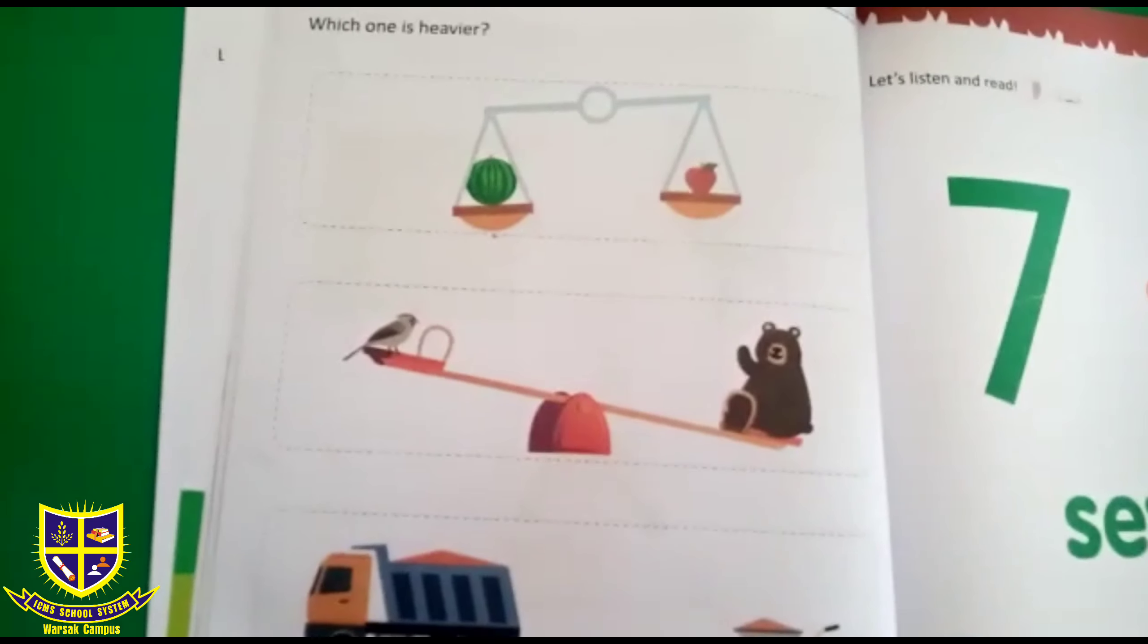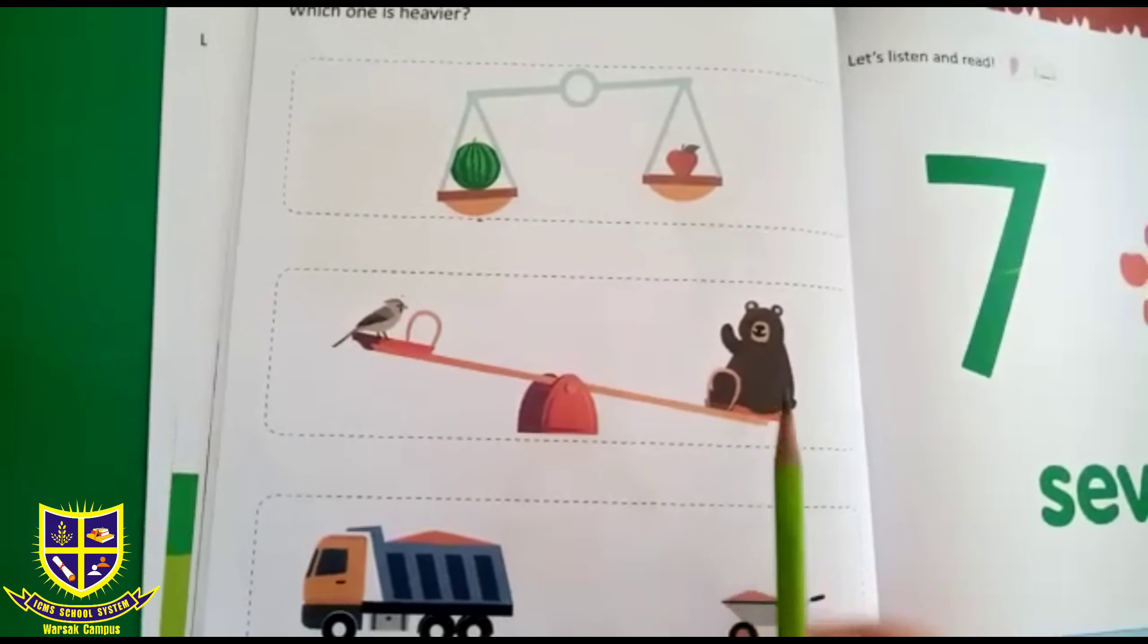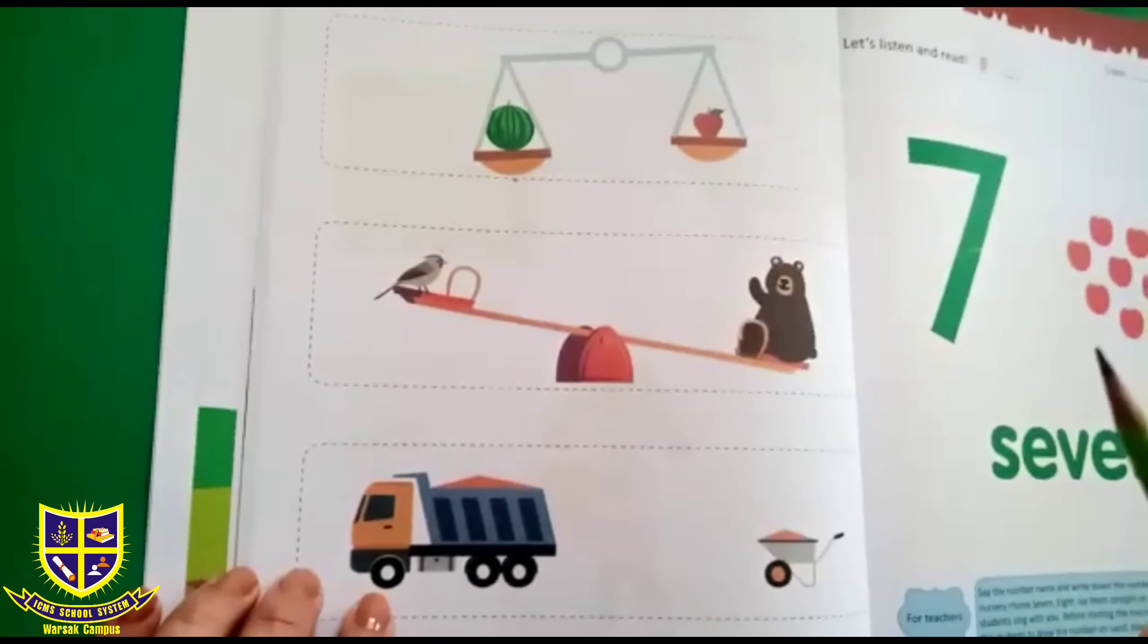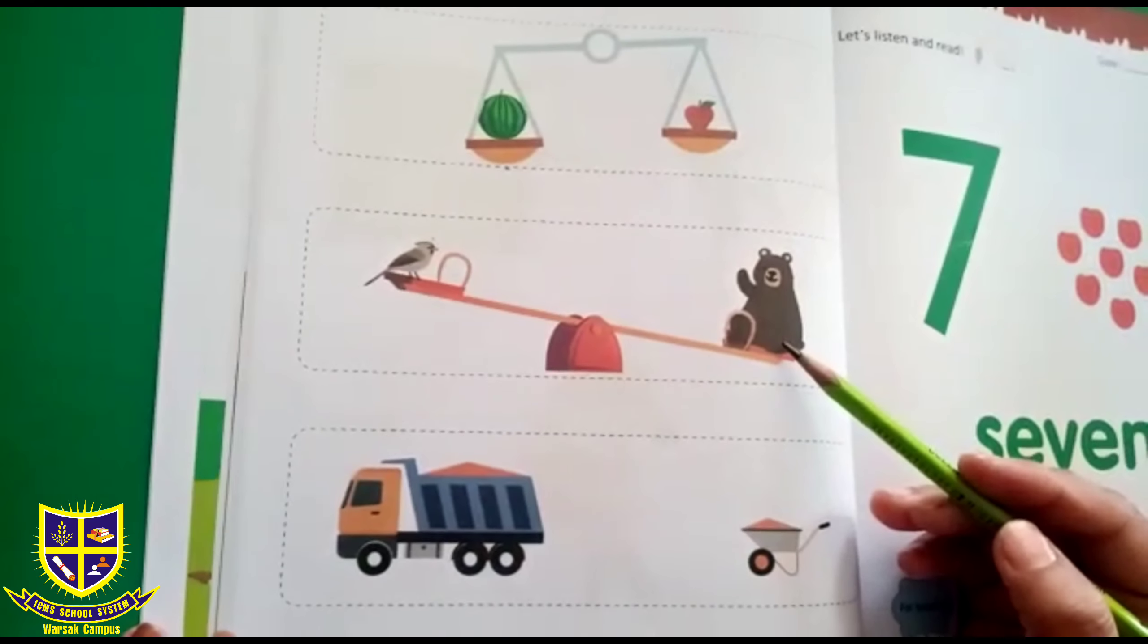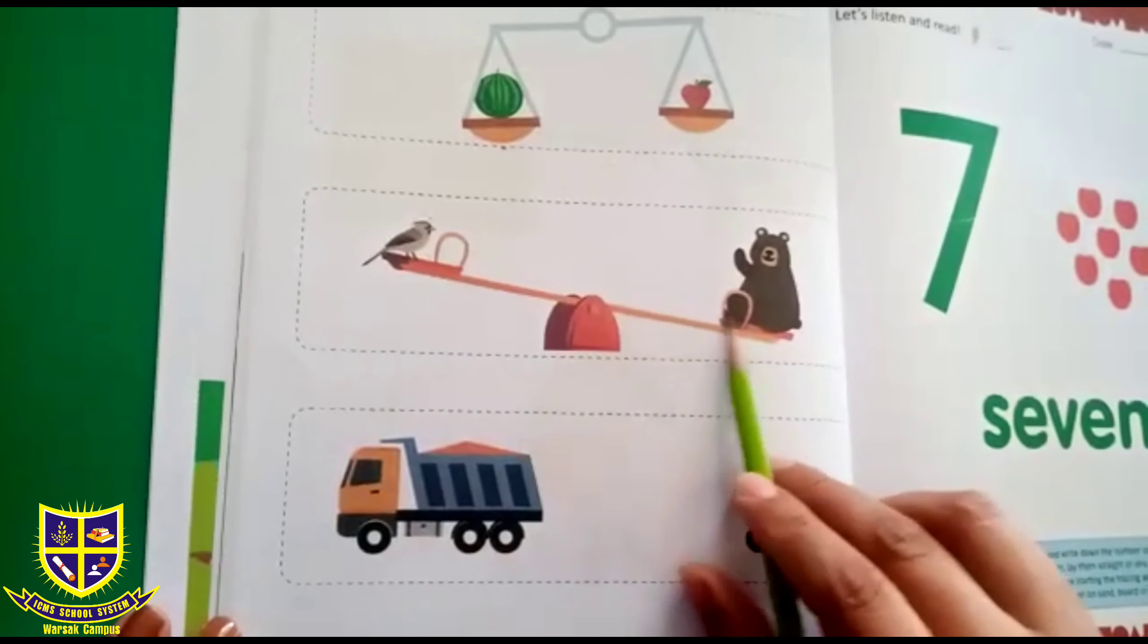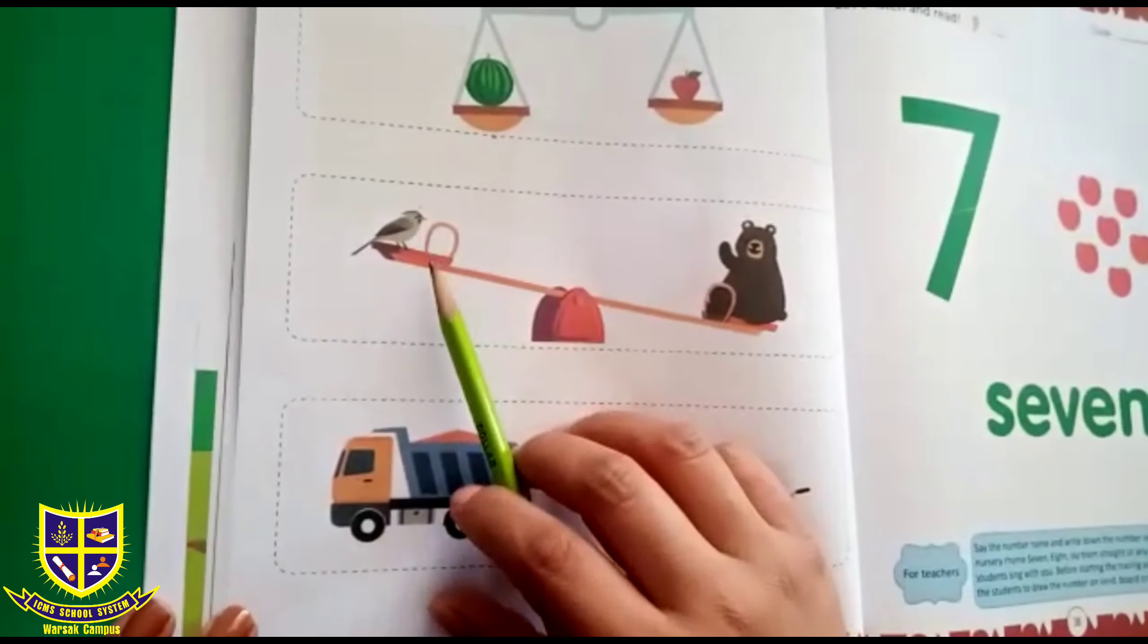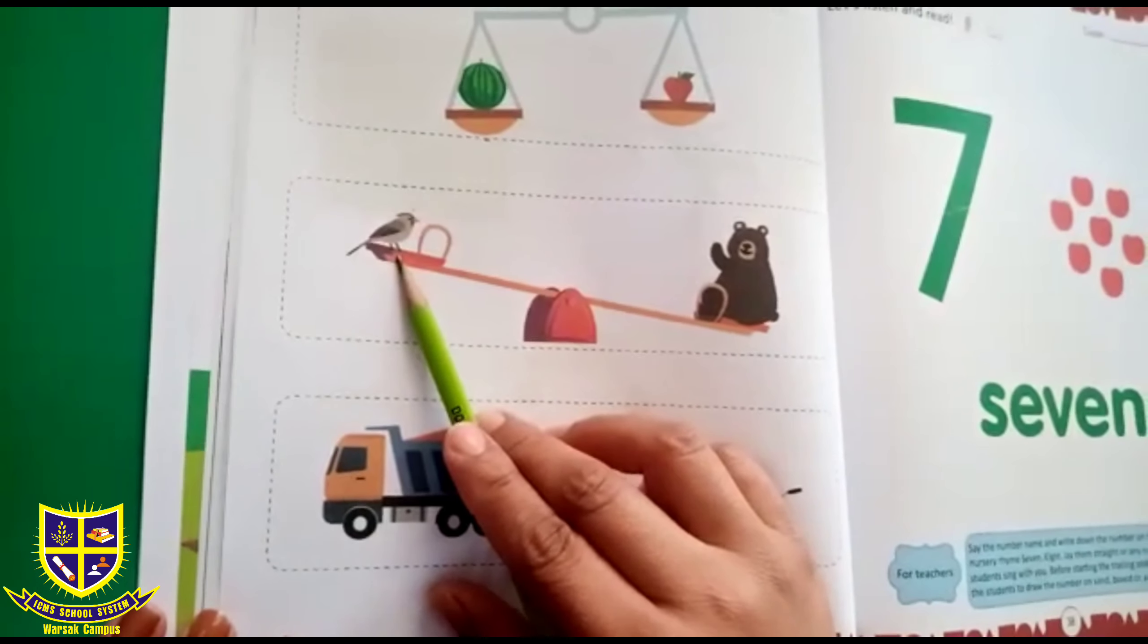On the next, you can see that there are two animals. One is a bird and one is a bear. One is a sparrow and one is a bear. You have seen whose weight is heavy. They are both on a seesaw. A seesaw is also a type of weight machine. You have seen this in the playground also.